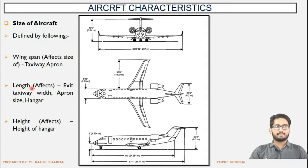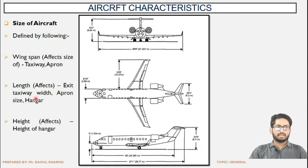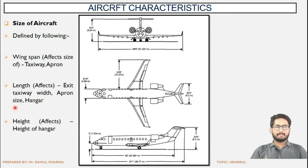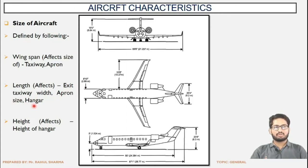The length of the aircraft will affect the exit taxiway width — the connection between the runway and the taxiway — the size of the apron, and the hangar where service and maintenance work is done. If a hangar is provided to accommodate the aircraft, then depending upon the length, the extent of the hangar has to be decided.